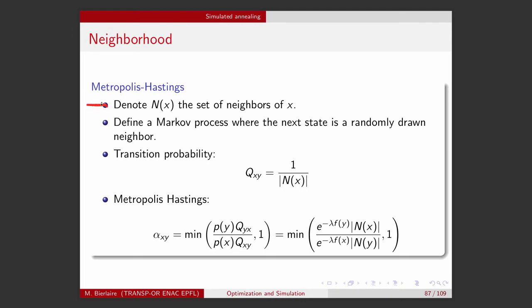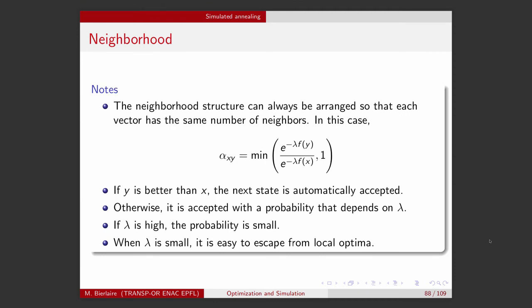Let's denote N(x) as the set of neighbors of x, which can be constructed by any neighborhood structure. I define a Markov process where the next state consists in jumping to one of the neighbors randomly. In this case, the transition probability is simply one divided by the number of neighbors. Now I can calculate the accept probability of Metropolis-Hastings — given by the formula we already know. The p's are given by e to the minus lambda f, and the q's are basically the ratio of the sizes of the neighborhoods. In practice, you can always make the problem symmetric, so that every solution has the same number of neighbors, and this simplifies the formula.